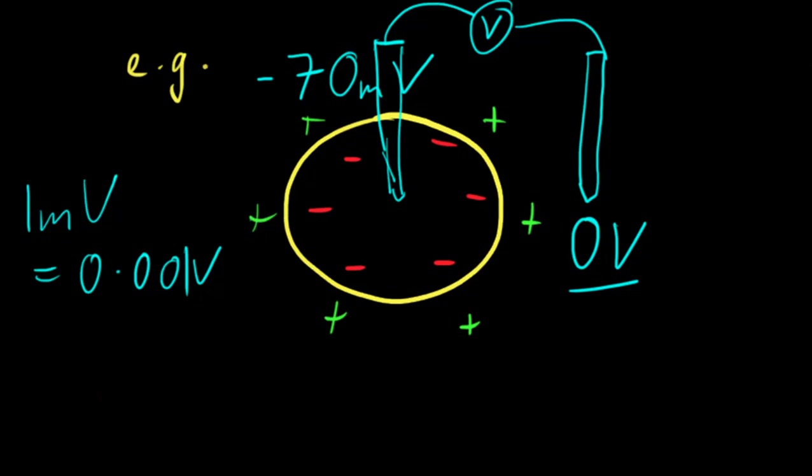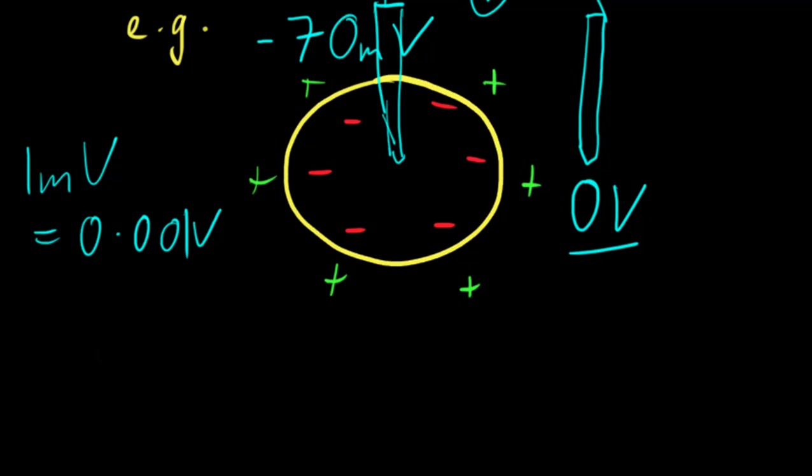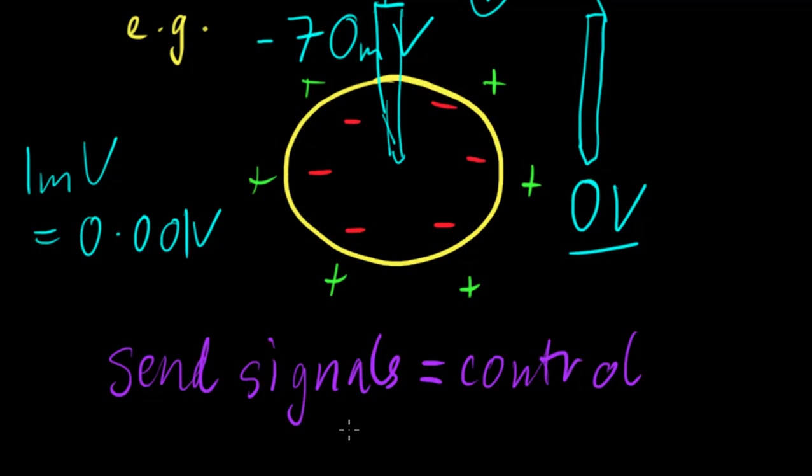And actually it's quite important because we'll just talk about sending signals. So sending signals, because that's what neurons need to do, they need to propagate a signal. And to do that, they need to be able to control the membrane potential.